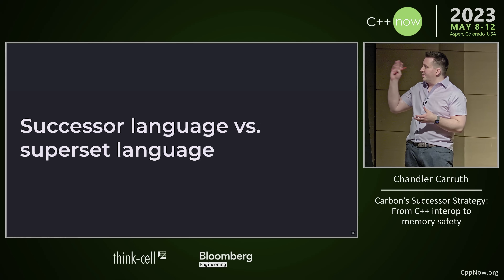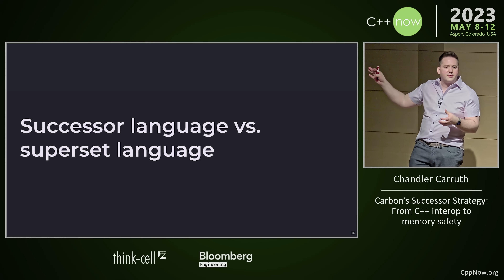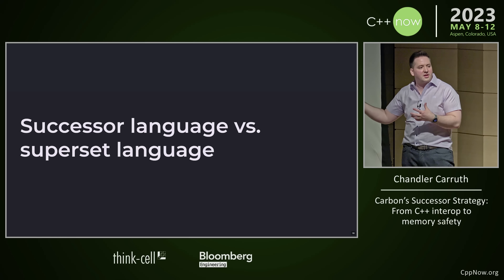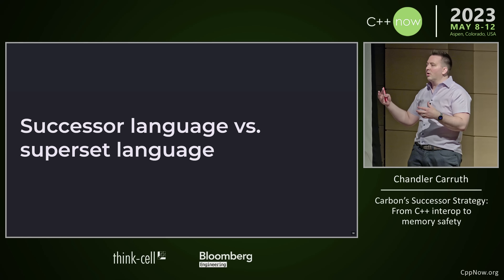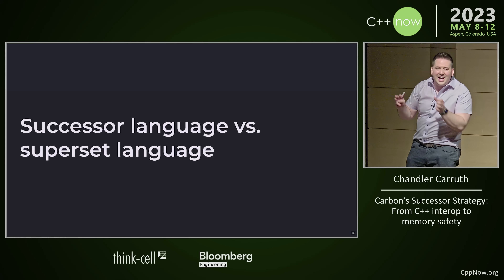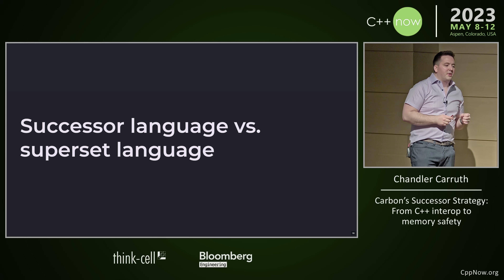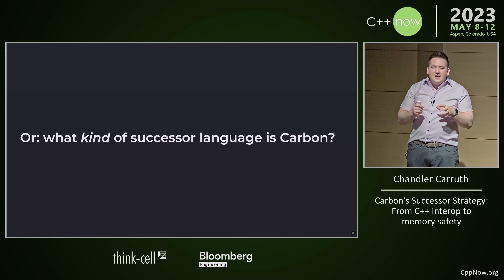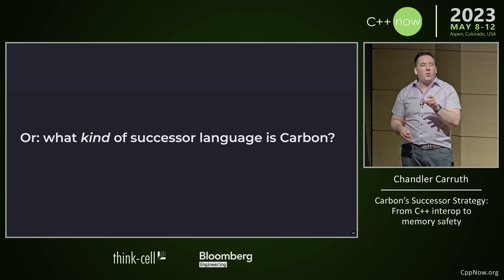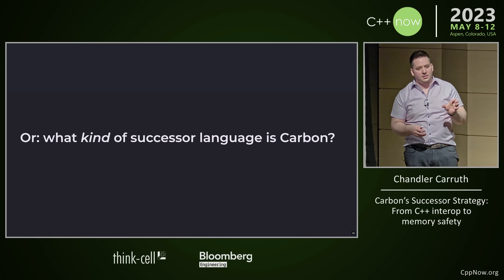We're going to start off with a successor language versus a superset language. I've seen this question a whole bunch of times. I think this was kind of an implied question during Herb's talk — why this successor approach versus superset approach? But I don't even like the framing of this question, because I think the actual question is not successor versus something else, but what kind of successor language is Carbon trying to be.